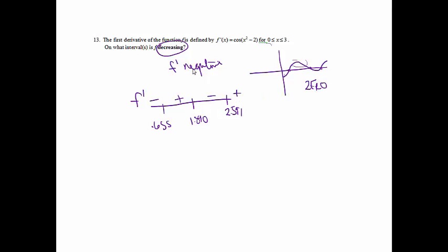And if I want to find where f is decreasing, I want to know where f prime is negative, which will be on these two intervals. And since I start at zero, we'll go from 0 to 0.655 and again from 1.890 to 2.591.